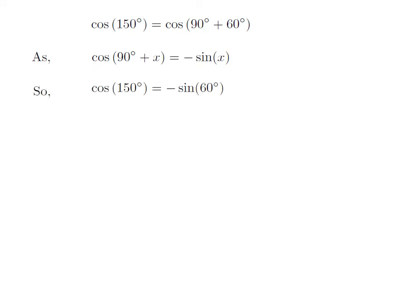Let us apply the above identity for cosine of 150 degrees. Here, x is 60 degrees. So, cosine of 150 degrees is equal to minus sine of 60 degrees.